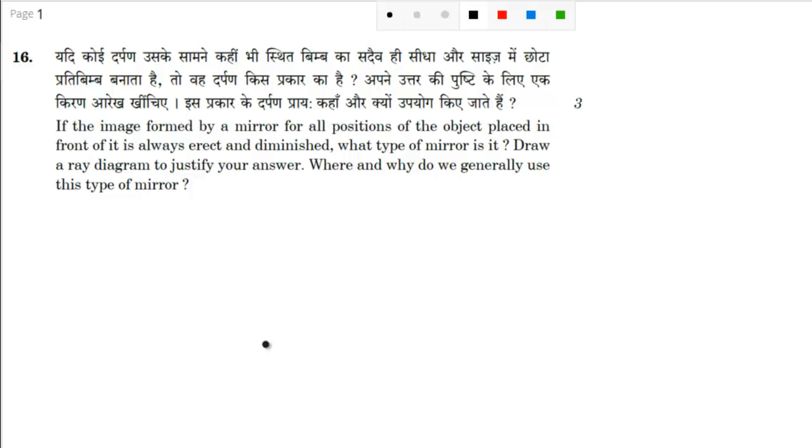Dear students, let's discuss question number 16. If the image formed by a mirror for all positions of the object placed in front of it is always erect and diminished, what type of mirror is it? Draw a ray diagram to justify your answer. Where and why do we generally use this type of mirror?